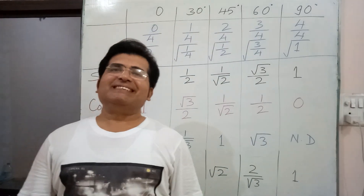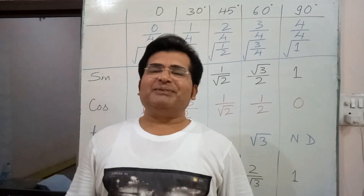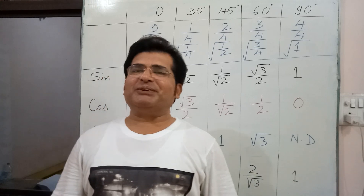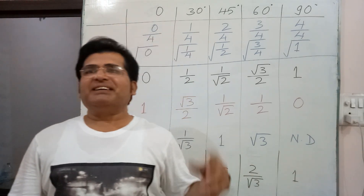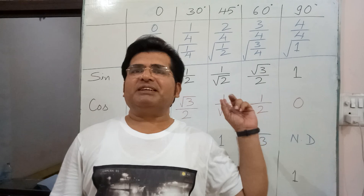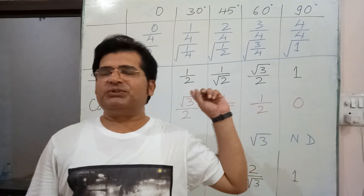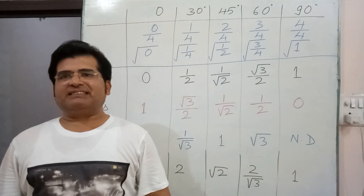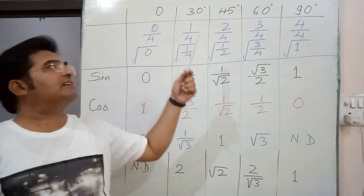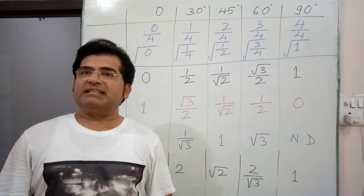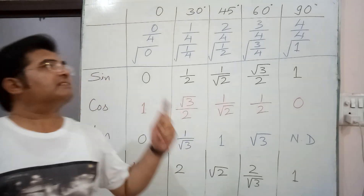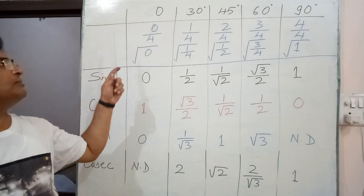Hello viewers, once again I stand before you with a new video. This is a video on trigonometry. Here I give you the trick about how to remember the trigonometric ratios — the values of angles 0 degree, 30 degree, 45 degree, 60 degree, and 90 degree. So the trick is this way.